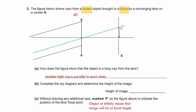For the last part — without drawing any additional ray, mark F on the figure to indicate the position of the focal point. Remember that an object at infinity means the image will be at the focal length. The focal point is on the principal axis of the lens, so this would be your focal point.